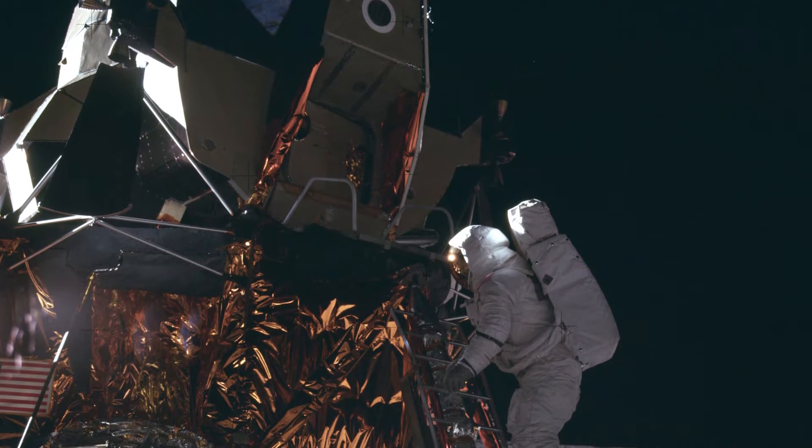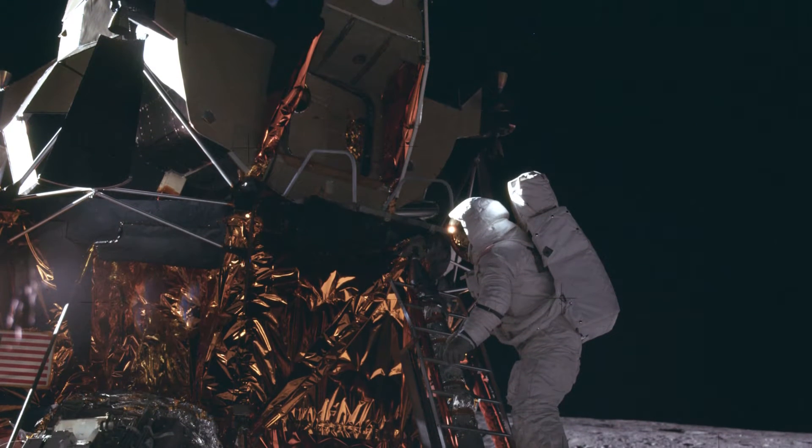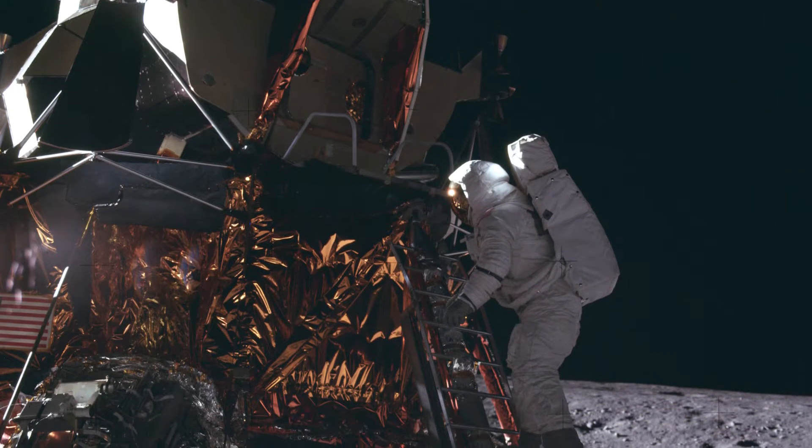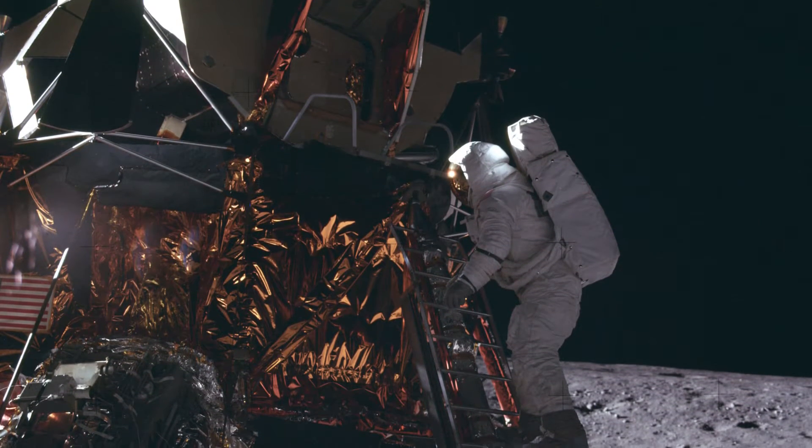Once they made this measurement, Bean and Conrad could partly power down the lunar module and then walk across the Moon. This assured that when they returned, the lunar module was ready to fly to the orbiting command module.